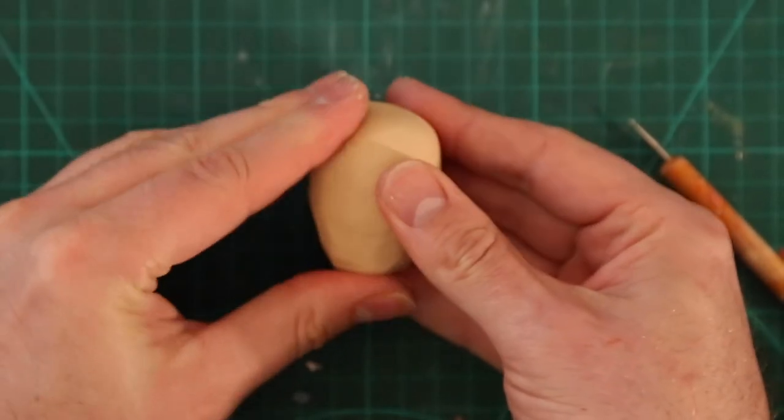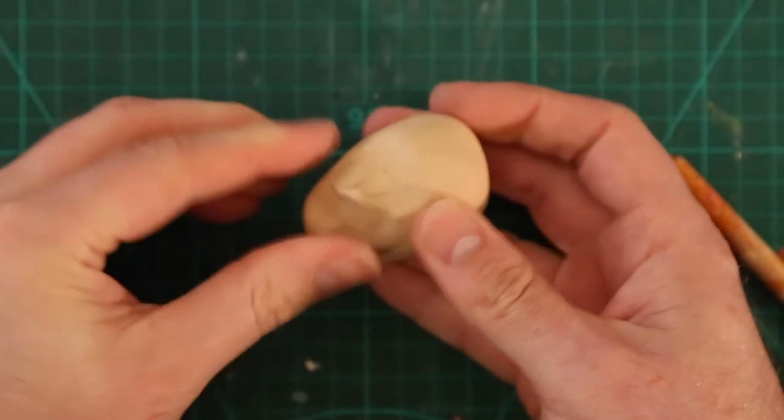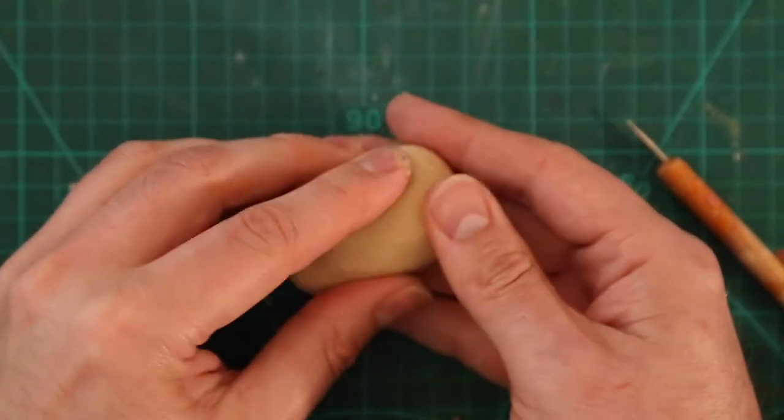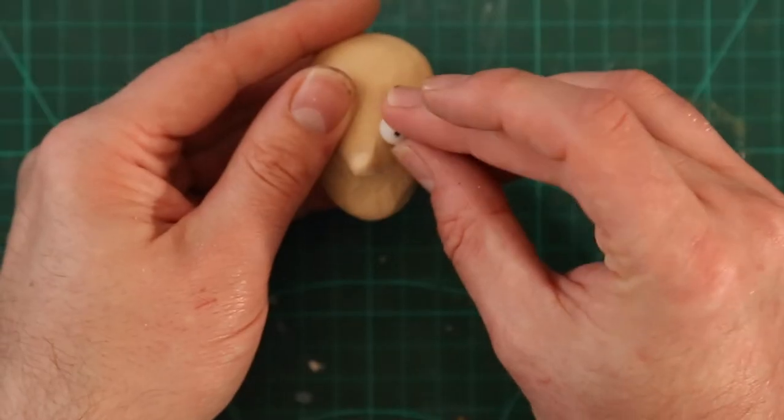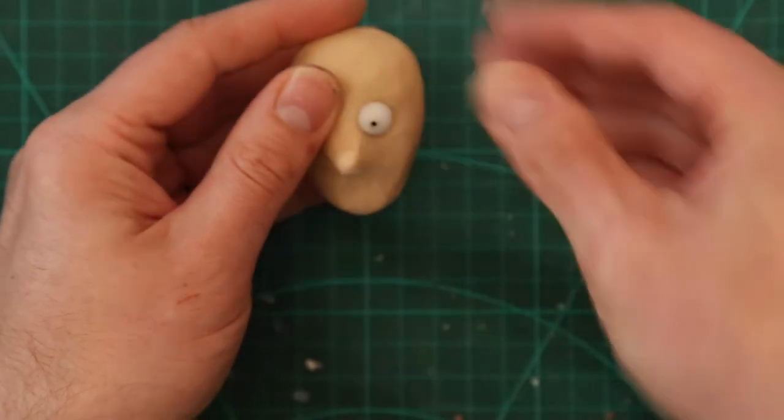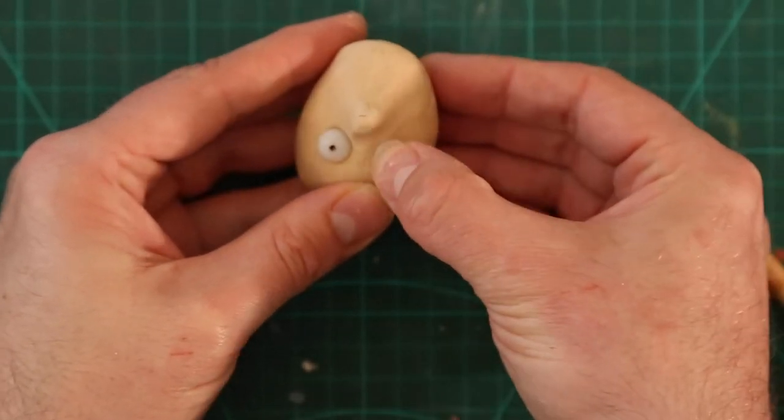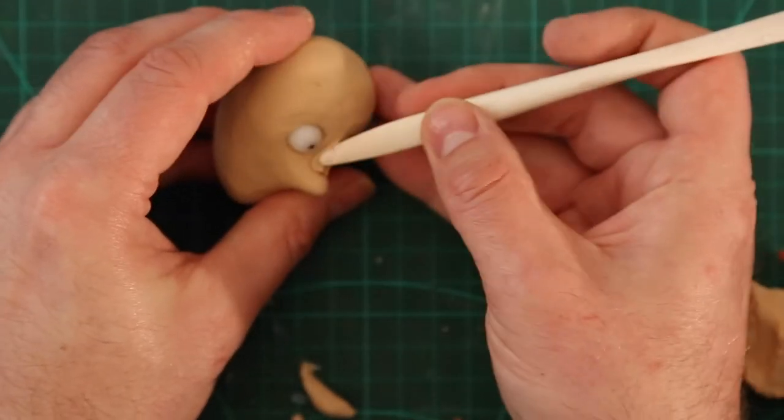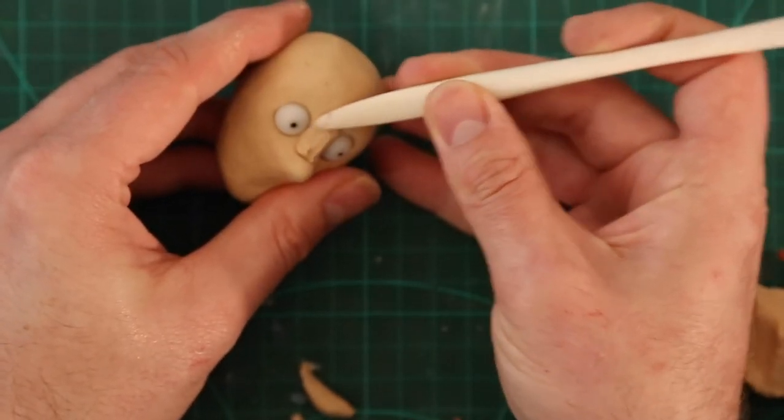And now it's time for the head. This is actually the second time I made this head. The first time I made it way too big and it looked like a bobble head, so I had to start again from scratch. As always, you start out by just rolling out the plasticine to the shape of the head and then pulling out the nose, pushing in the eyes.